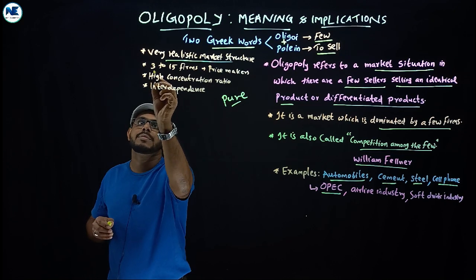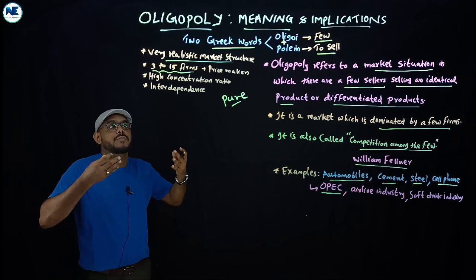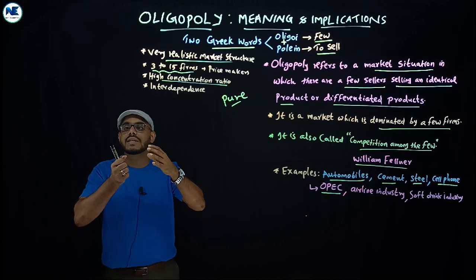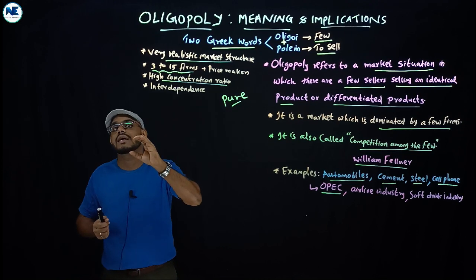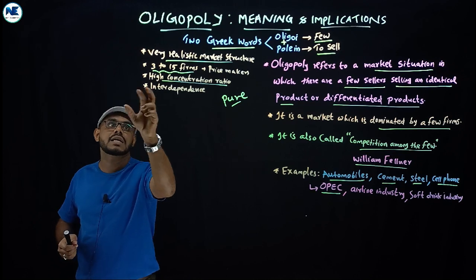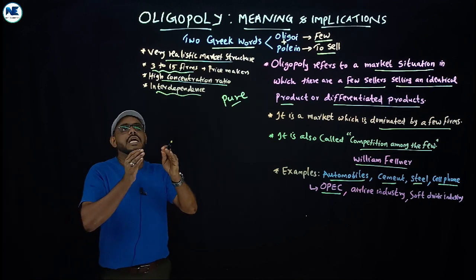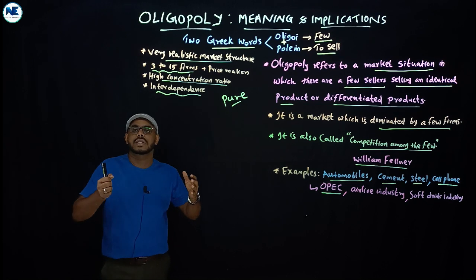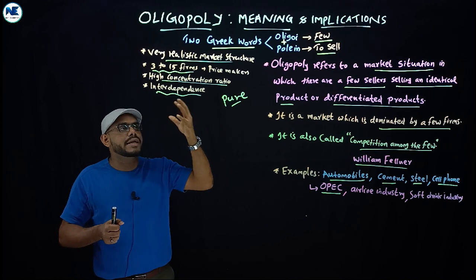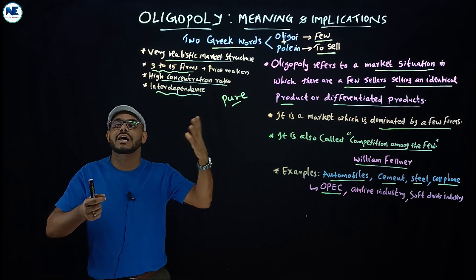Here we can see a few firms—maybe three to fifteen firms—that act as price makers because they are very large firms and have high concentration ratio. Generally a few variable firms control the market. The market share of firms is very large. That is why the market has high concentration ratio. Among the firms we can see interdependence—that is the unique feature of oligopoly—a high level of mutual interdependence. A firm takes any action related to price or output only by considering the action and reactions of its rivals.